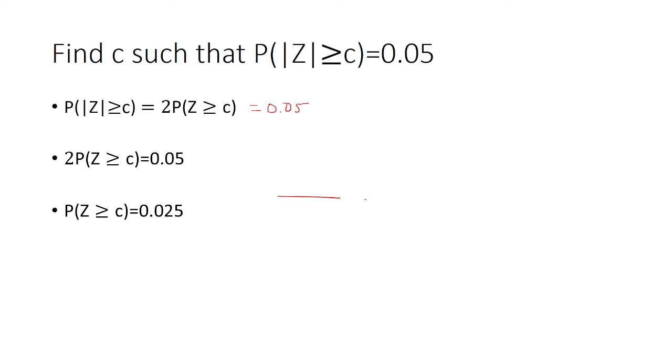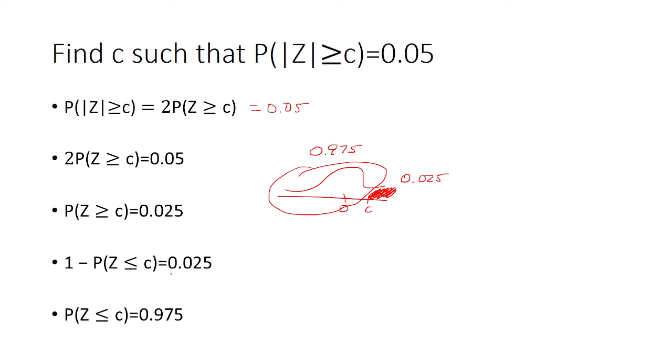This area is 0.025, which means the complementary area is 0.975. Using the complement rule: 1 minus P(Z ≤ c) equals 0.025, so P(Z ≤ c) equals 0.975.